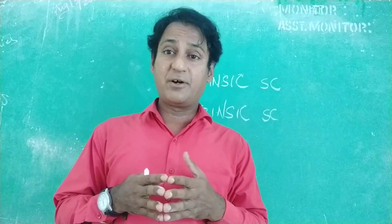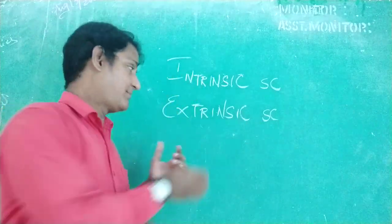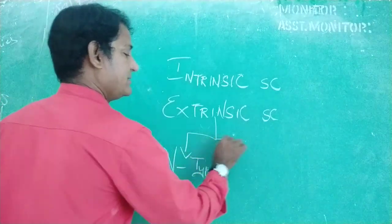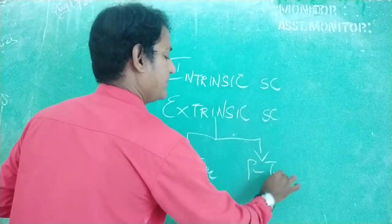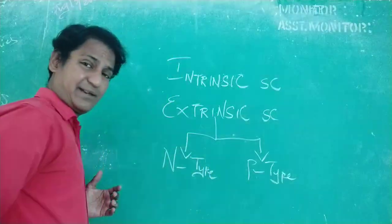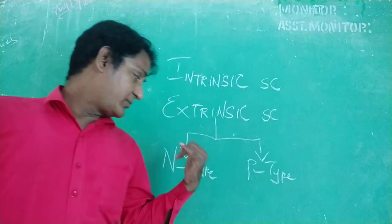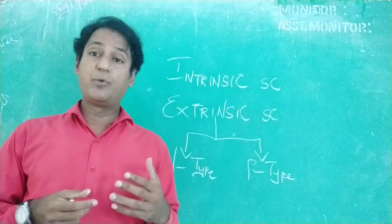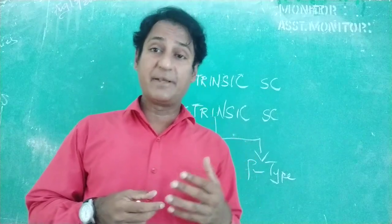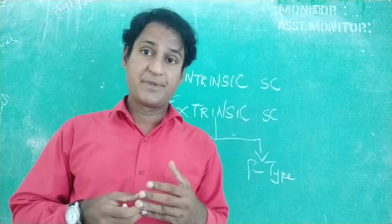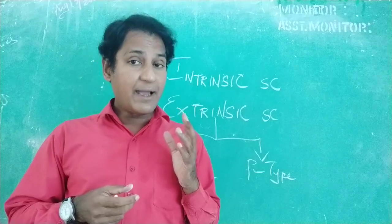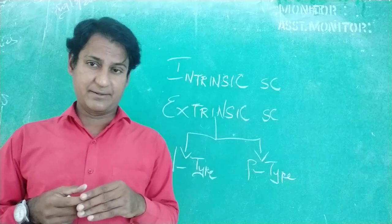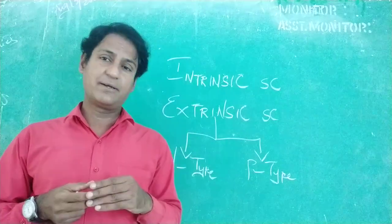If we add doping atoms or impurity atoms to a pure semiconductor like an intrinsic semiconductor, then that type of semiconductor is called an extrinsic semiconductor. There are two types of extrinsic semiconductor: N-type semiconductor and P-type semiconductor. Adding impurity atoms to any pure semiconductor is called doping.